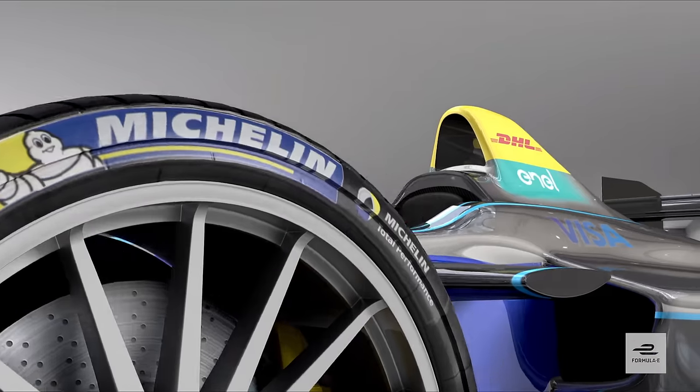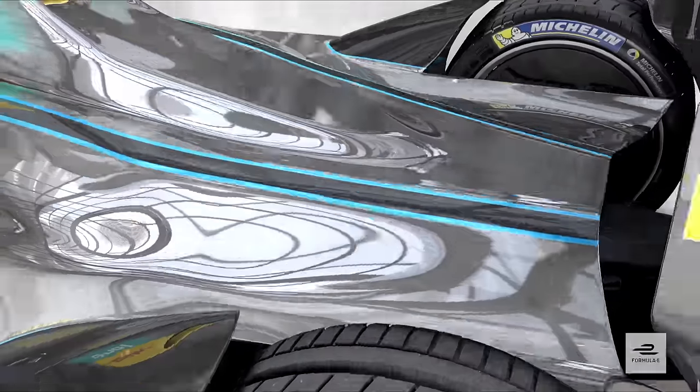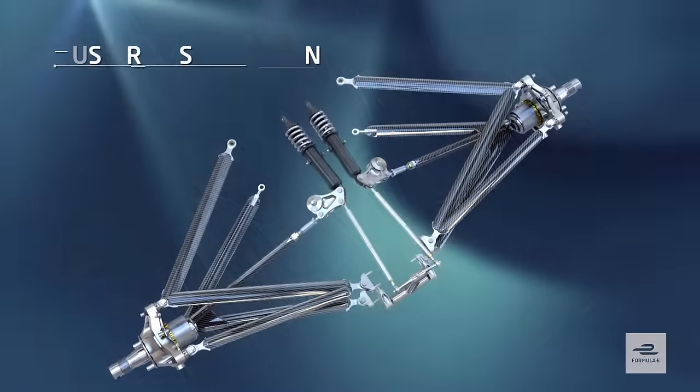Since Season 2, the Formula E rules have allowed teams to design and develop their own rear suspension, so there are now a number of different variants in use.